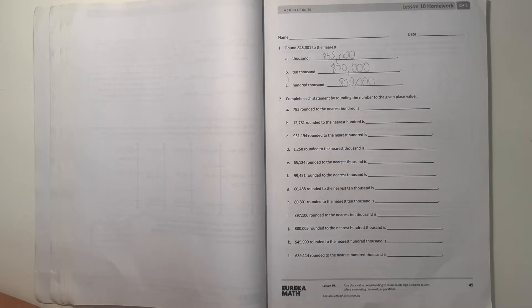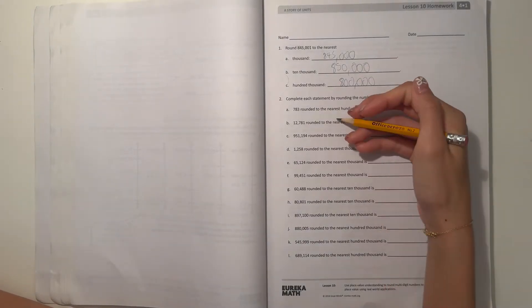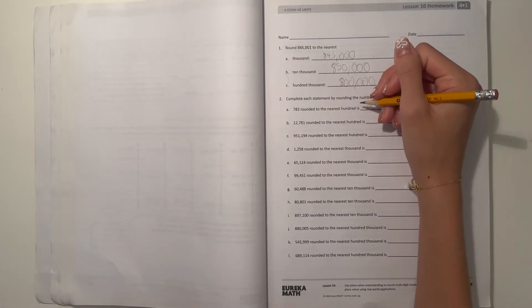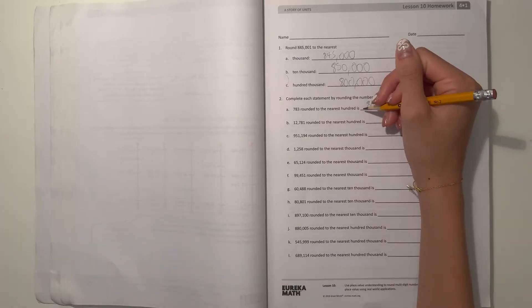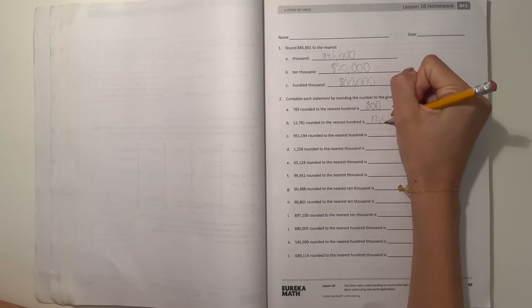And number 2, complete each statement by rounding the number to the given place value. So 783 to the nearest hundred would be 800. 12,781 to the nearest hundred would be 12,800.